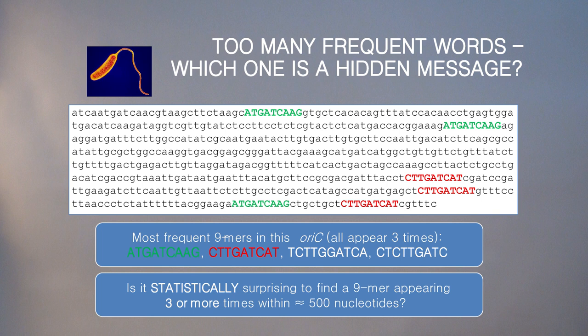We actually find four frequent words. Not to mention that we don't know yet whether it's even statistically surprising to find a 9-mer in a string of length 500 that appears three or more times. So which of these four represents a real DnaA box, and which of them are just statistical artifacts?